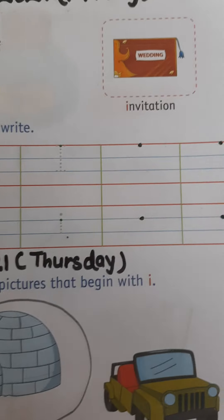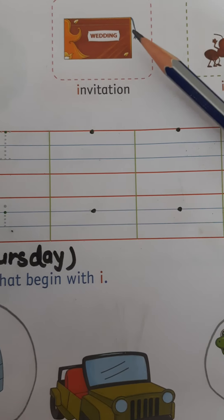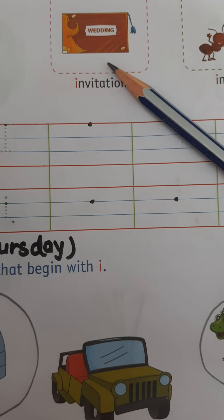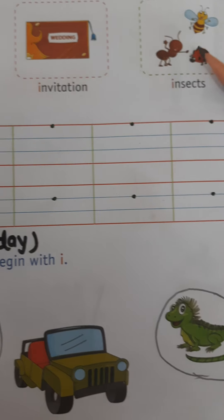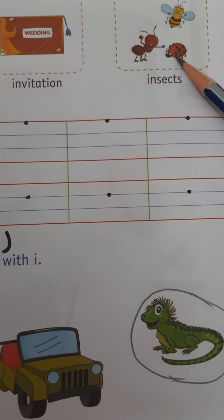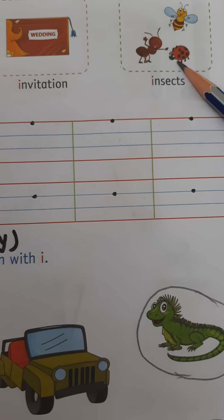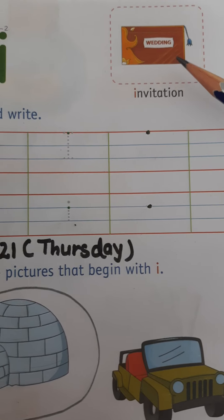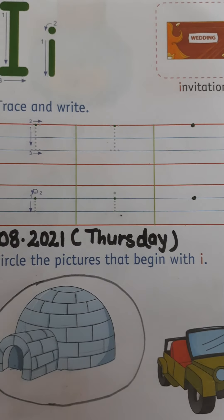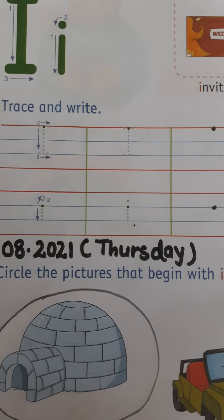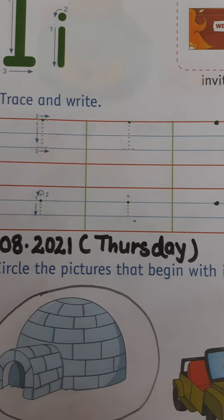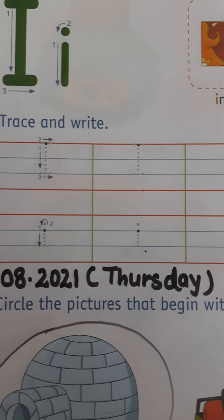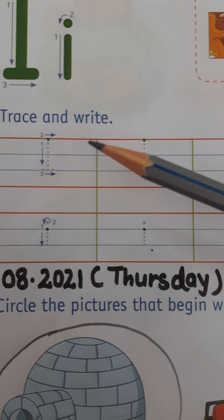Let's see the pictures first. I is for invitation. I is for insects. And what is the phonic sound of i children? It is 'i' — a short sound. Chhoti awaaz nikaali hai. Now let's trace.